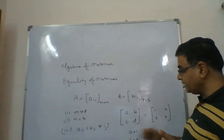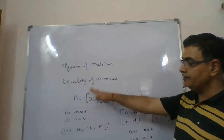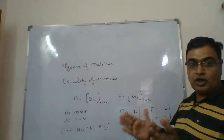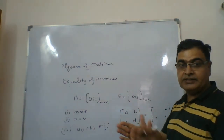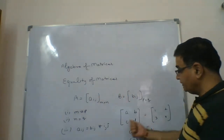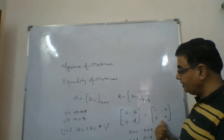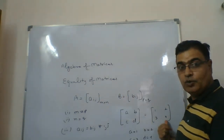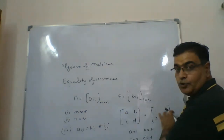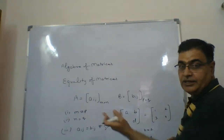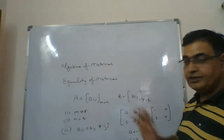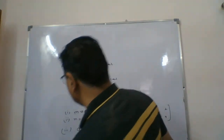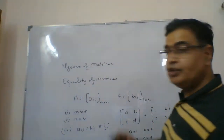If these conditions hold, we say the matrices are equal. A short question can be asked in exams where two matrices are given and they say these two matrices are equal — you should find out the unknown values A, B, C, D or whatever is asked. This is the type of question they can ask on equality of matrices.